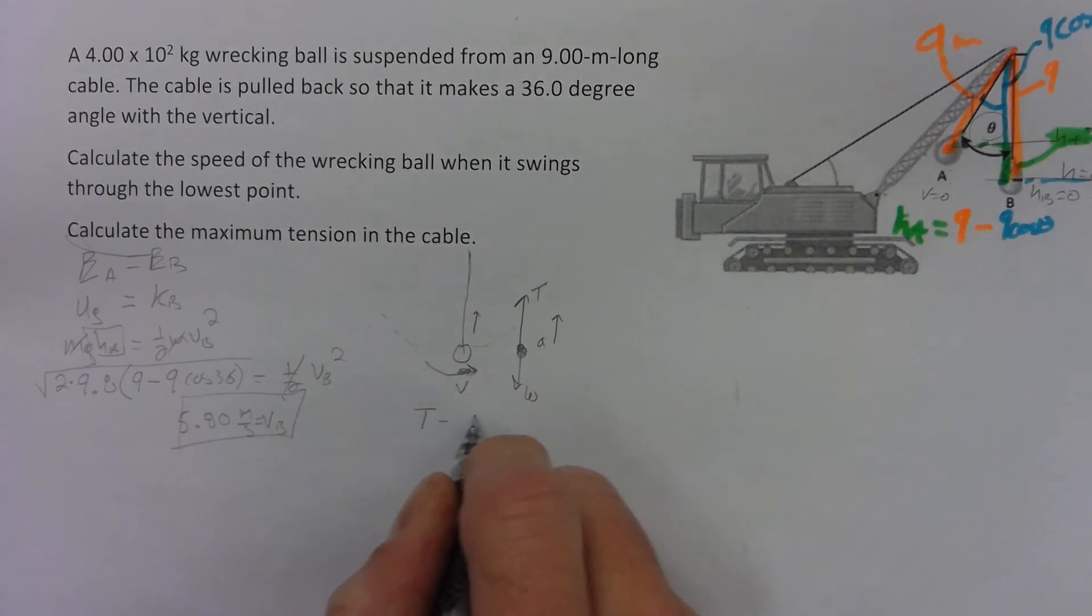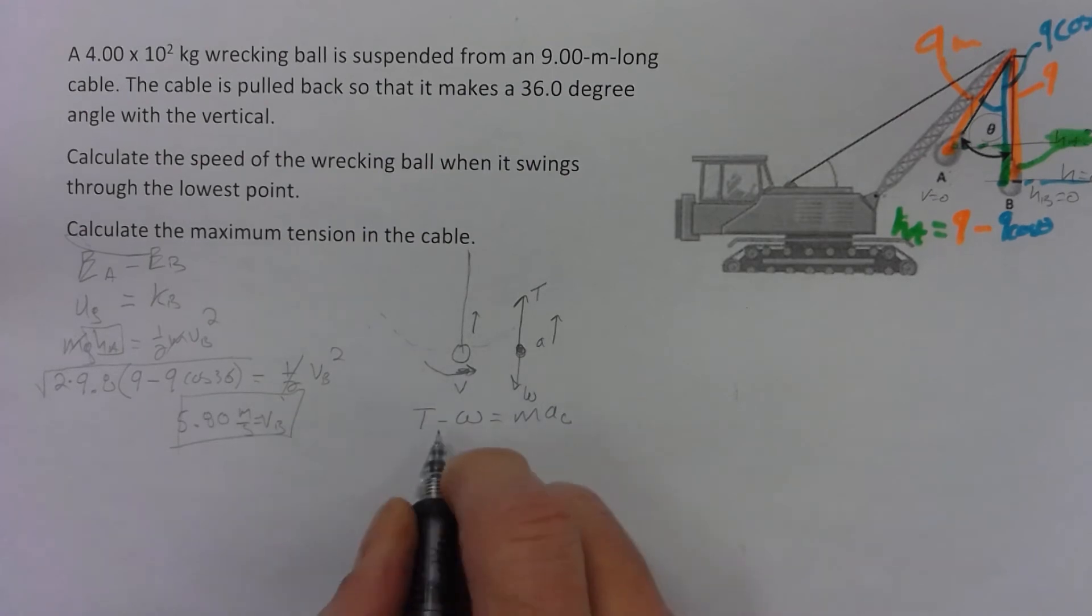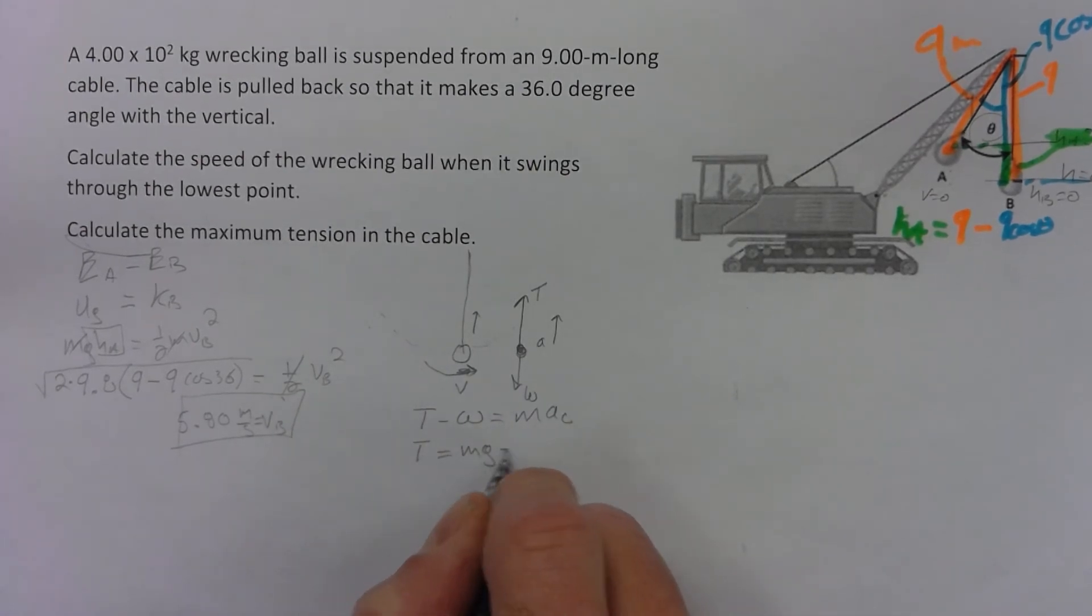So that tension minus that weight, it's going to equal m a_centripetal. So that tension will equal mg, plus, right, add the mg to the other side, m v squared over r.